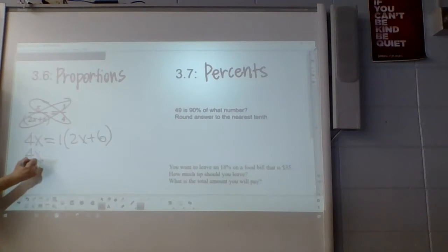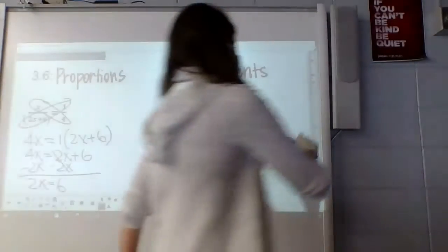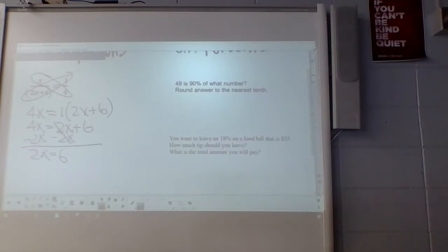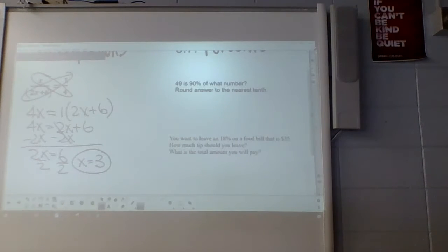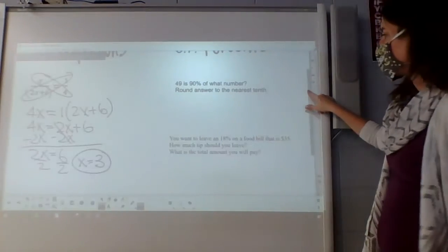So then I need to move the x to the other side. So I'm going to move that 2x over. In order to move it to the other side, this is where we undo it. And then to get my x alone, I divide by 2.